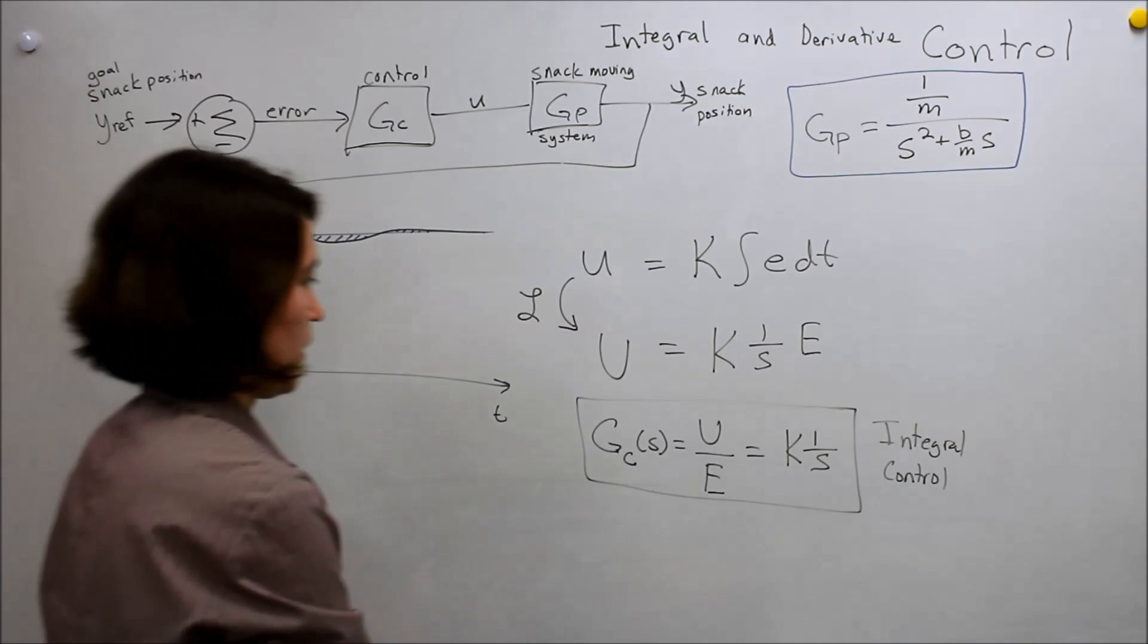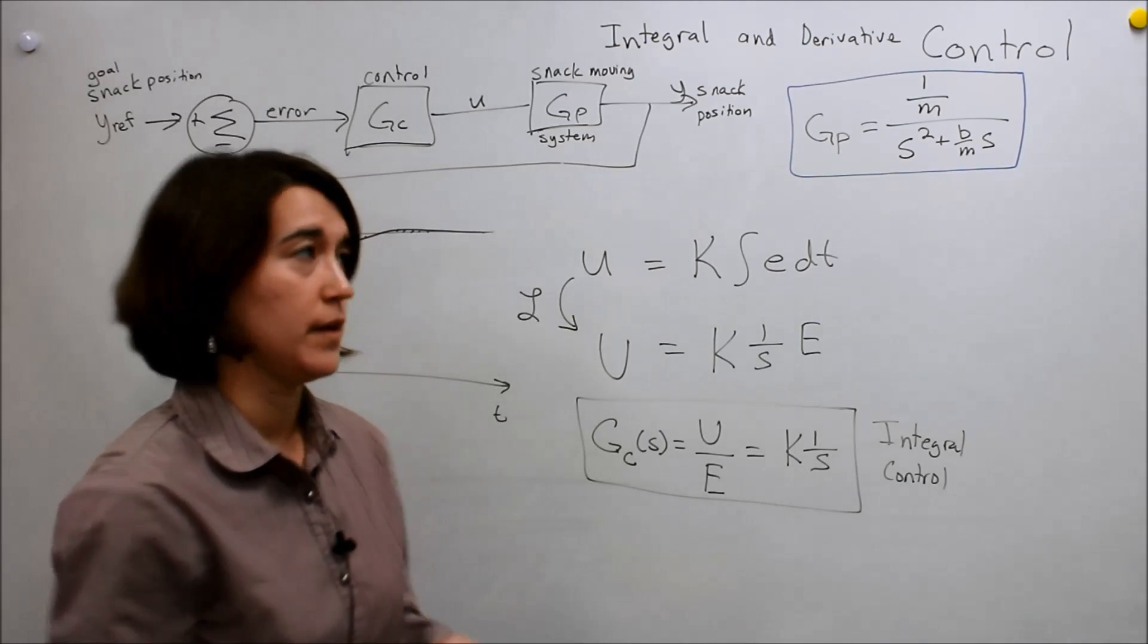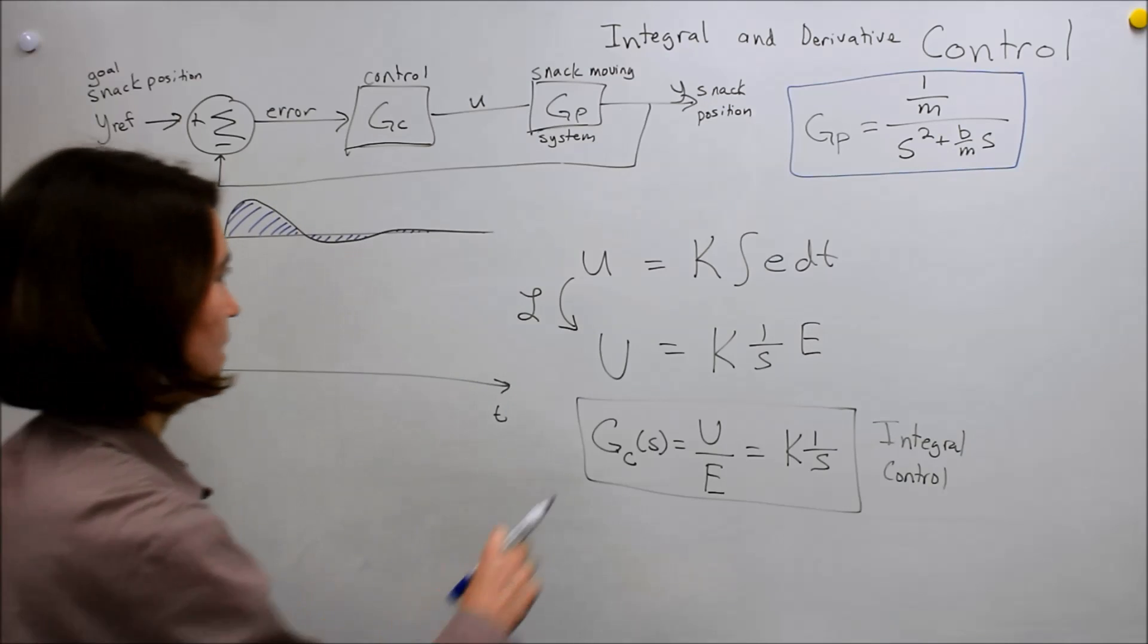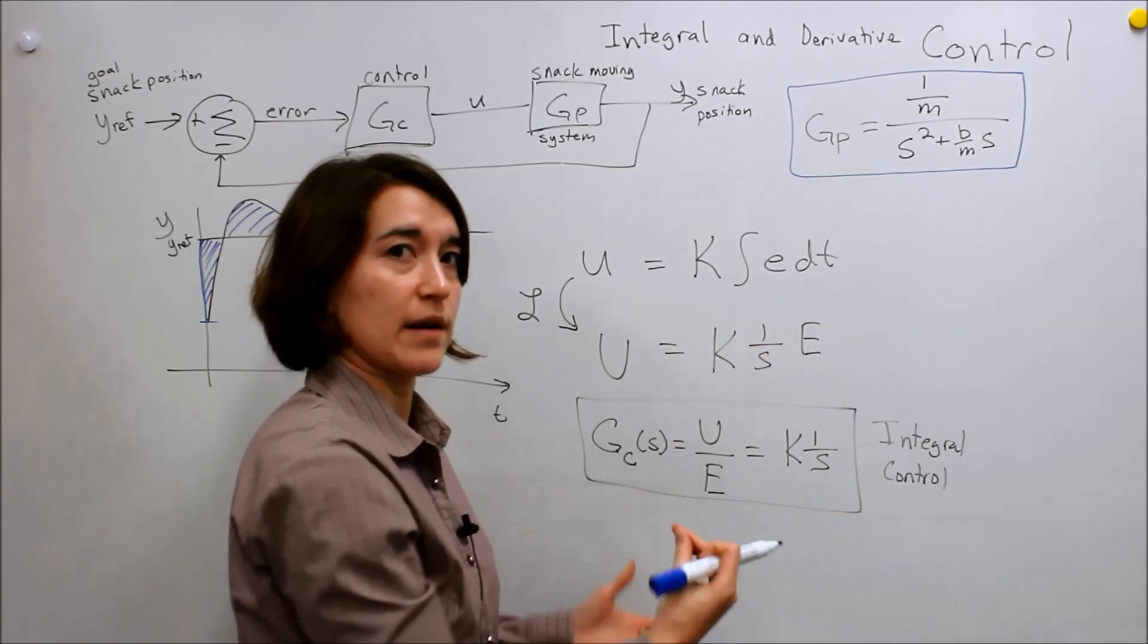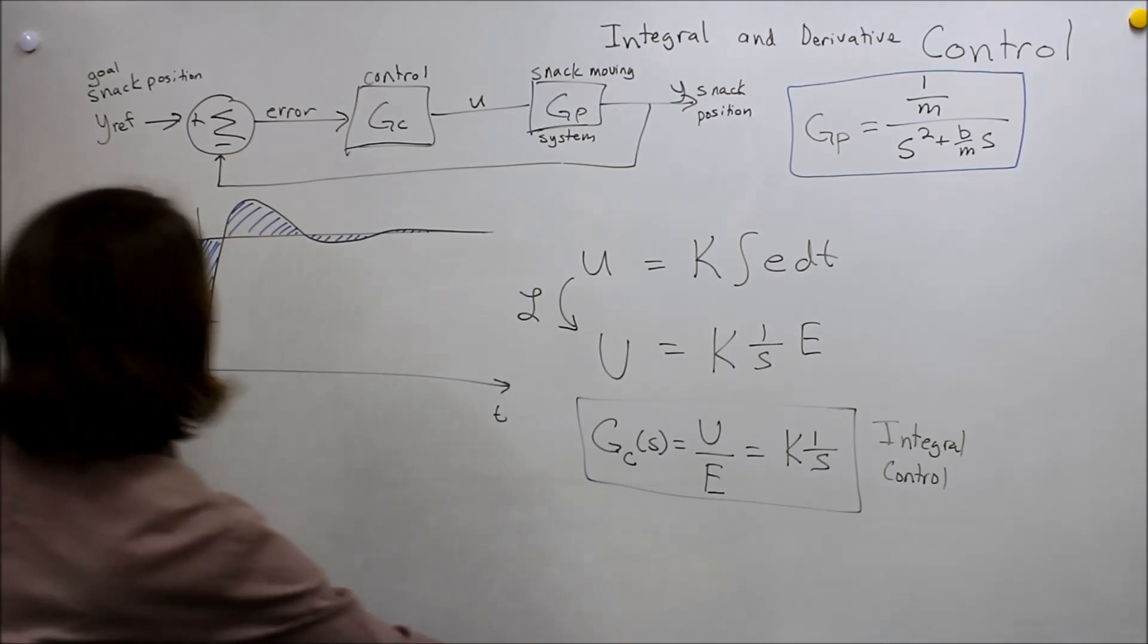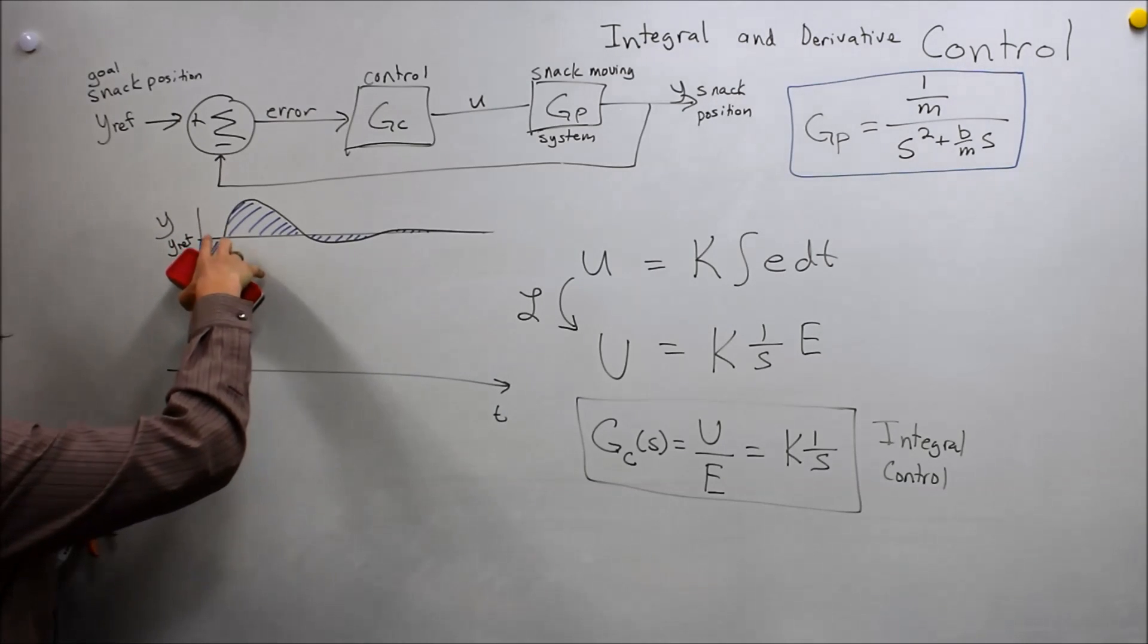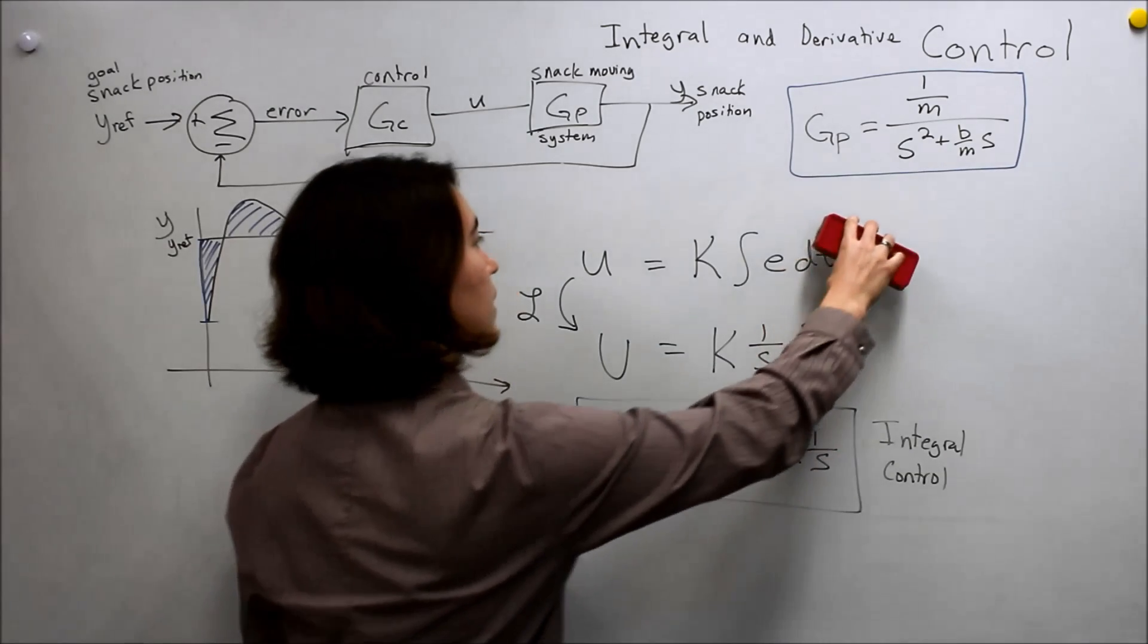So the control then for derivative control, pretty self-explanatory actually, the only thing we change is instead of it being the integral of E, we actually look at the derivative of E. So this would be looking at the signal, looking at the slope of it, and changing our input based on the slope of that.